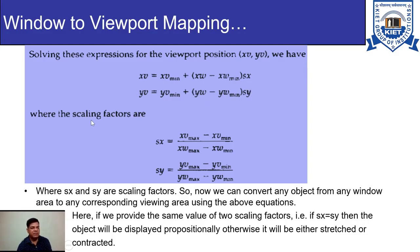Here sx and sy are scaling factors. Whenever we change the dimensions of any picture it is called scaling — we can either increase or decrease the size. The scaling factors are defined as: sx = (xv_max − xv_min) / (xw_max − xw_min), and sy = (yv_max − yv_min) / (yw_max − yw_min).